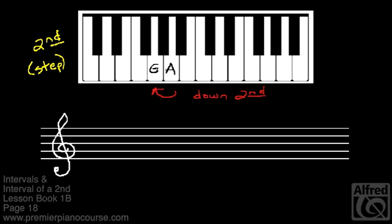Remember on the staff, you'll be going from a line to a space or a space to a line. Here is A in the treble staff. A is a space note. To go down a second from A, you'll go to the very next line.